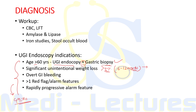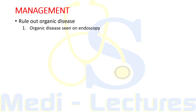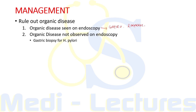Coming to management: first and foremost, we have to rule out any organic disease. If endoscopy is performed and organic disease is seen — be it peptic ulcer disease, reflux esophagitis, or any malignancy — we directly refer this patient to a gastroenterologist. If organic disease is not observed on endoscopy, we will do a gastric biopsy to confirm the presence of H. pylori. If present, we treat for H. pylori and confirm eradication; if absent, we treat this as functional dyspepsia.